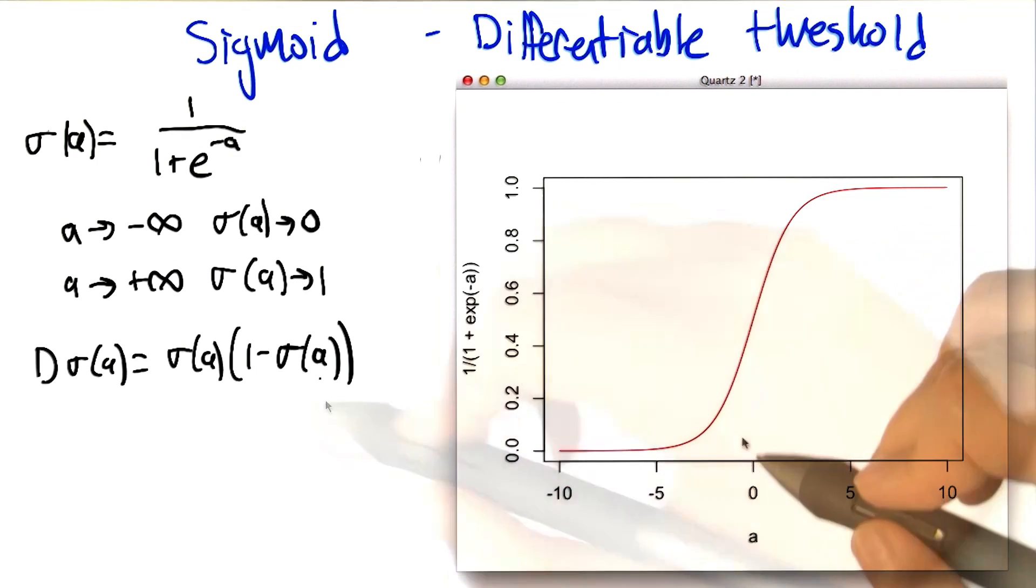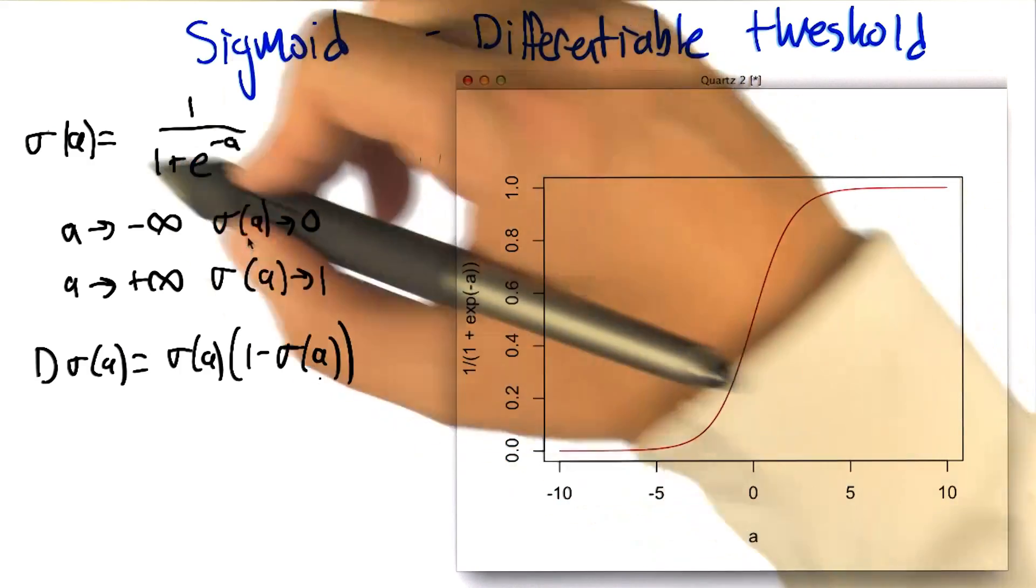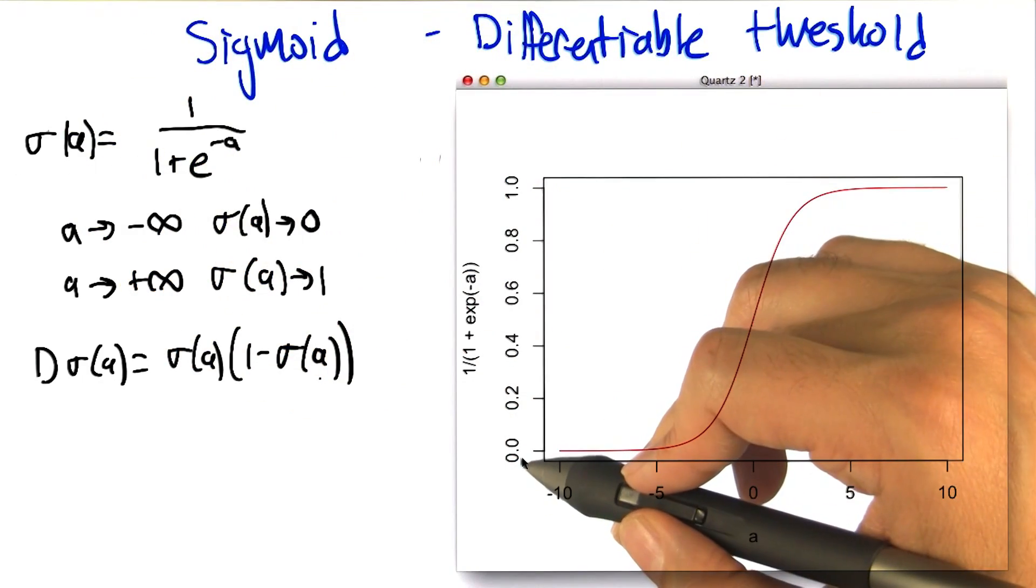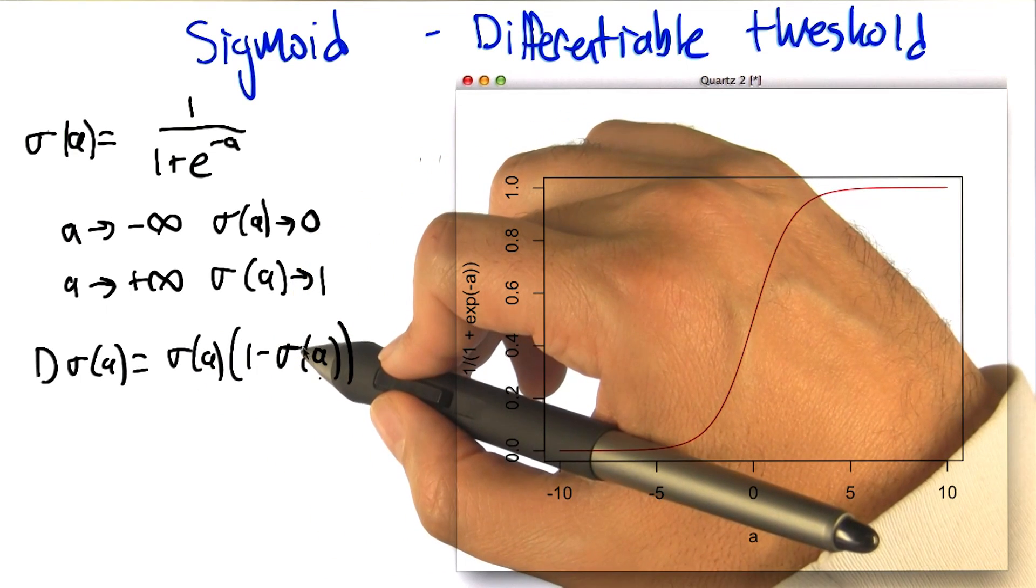So what's neat about this is as our activation gets very negative, then our sigma value gets closer and closer to zero. And if you look at what our derivative is there, it's something like zero times something like one minus zero.